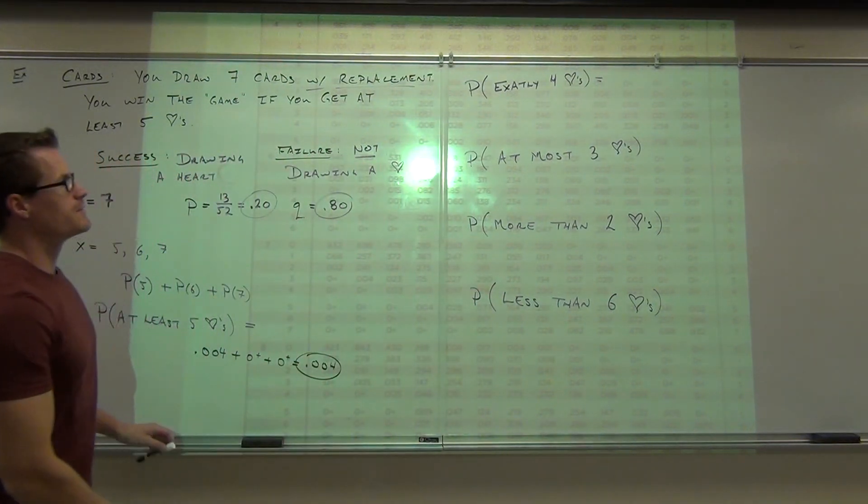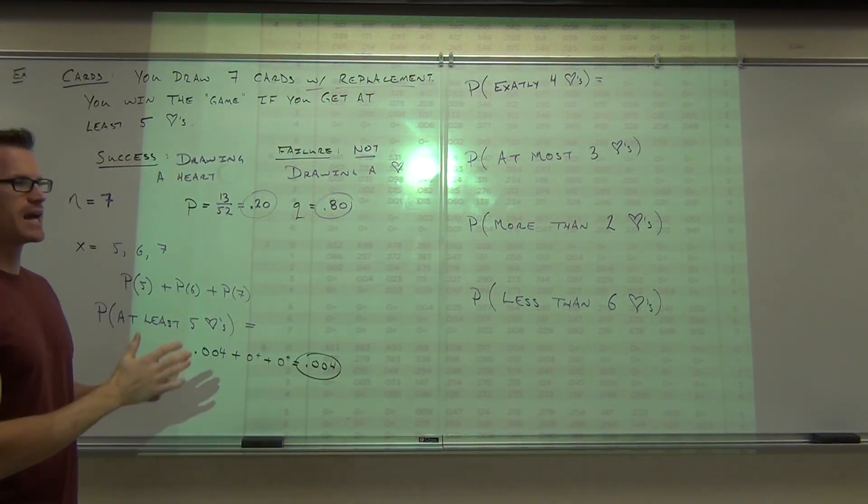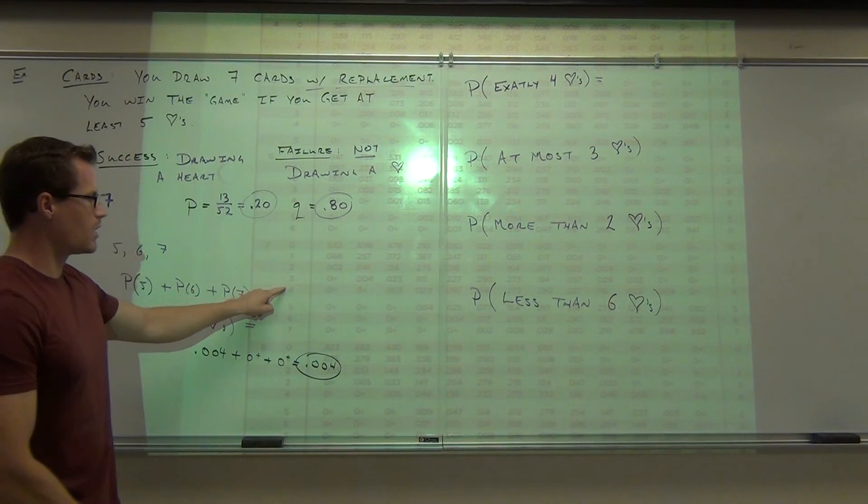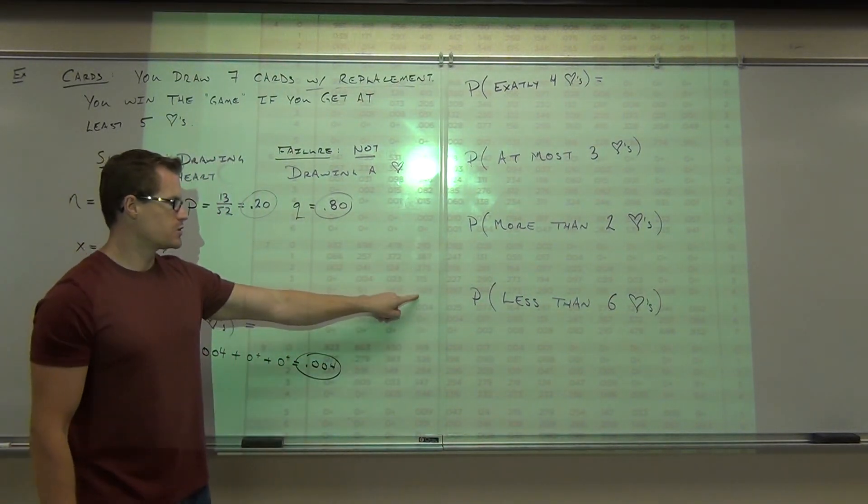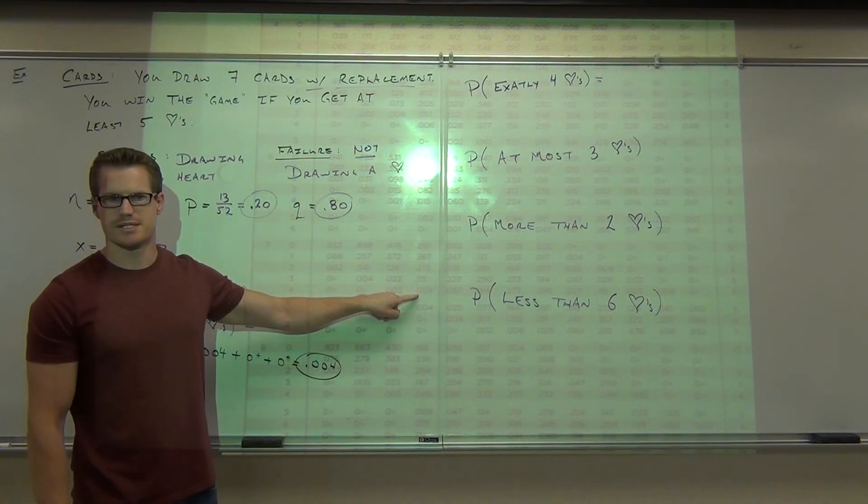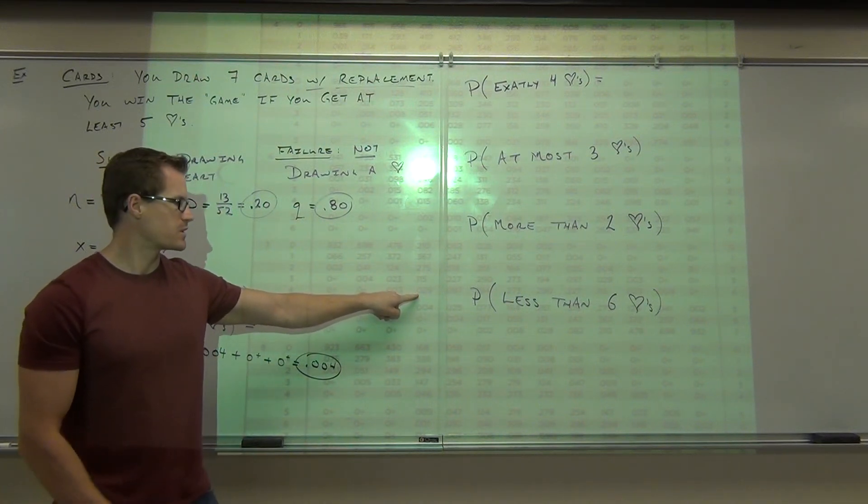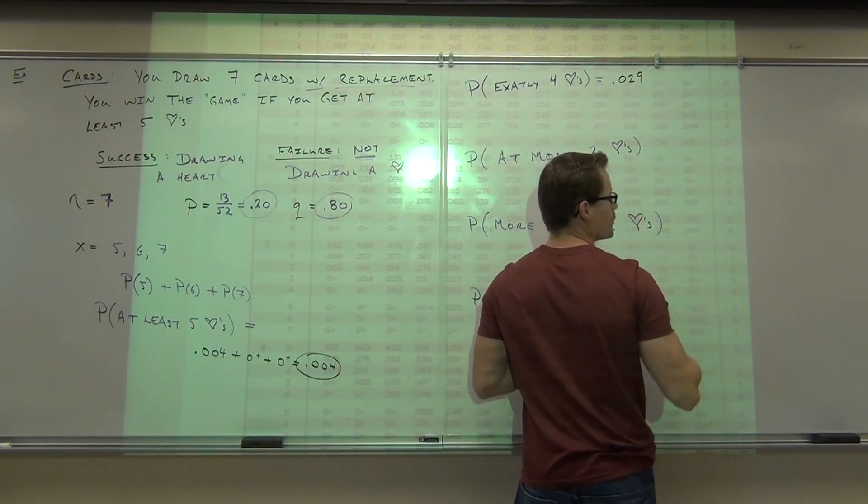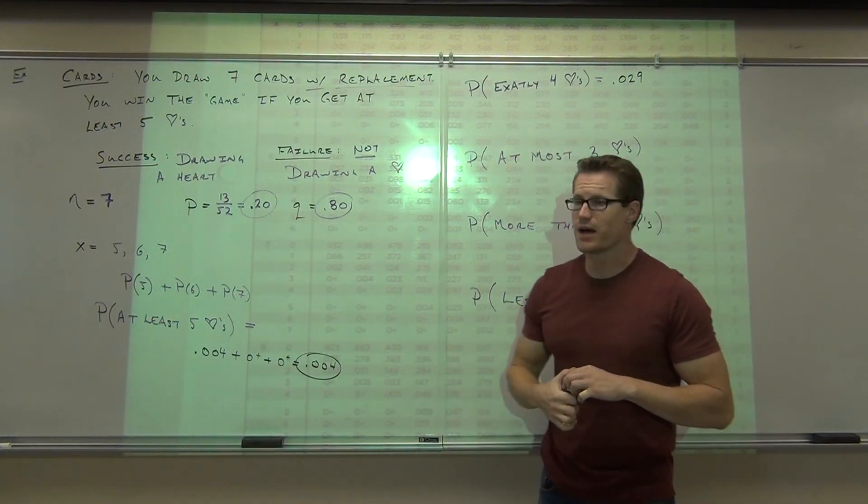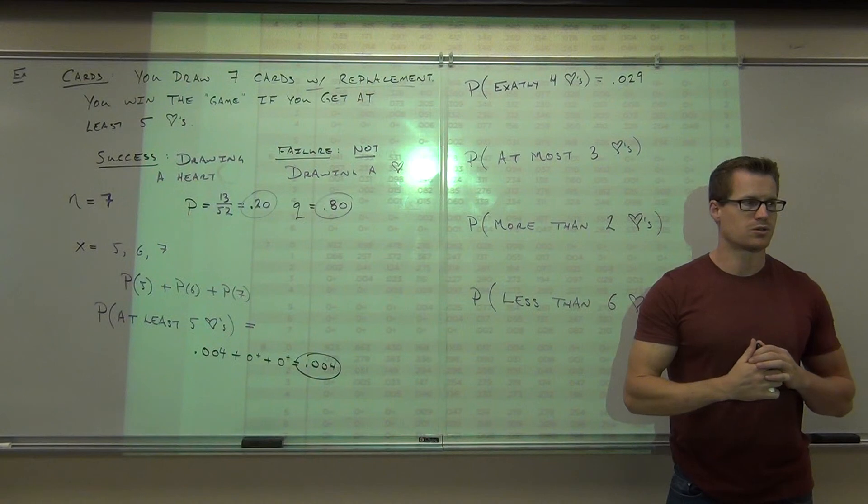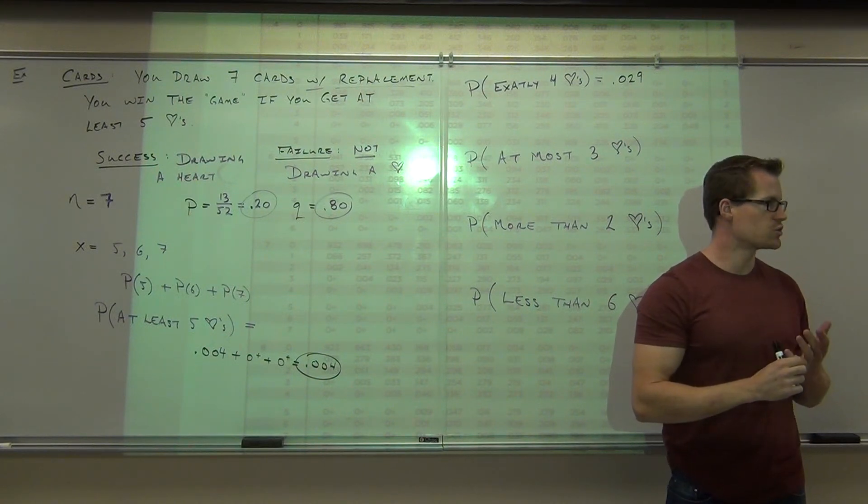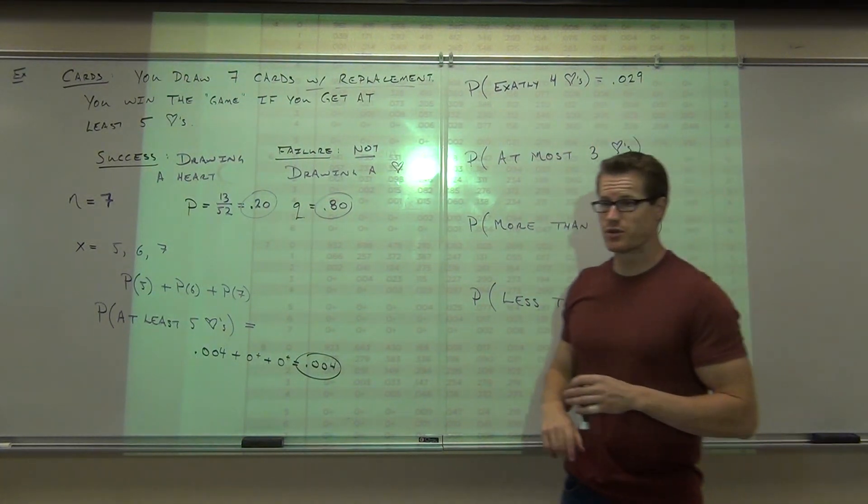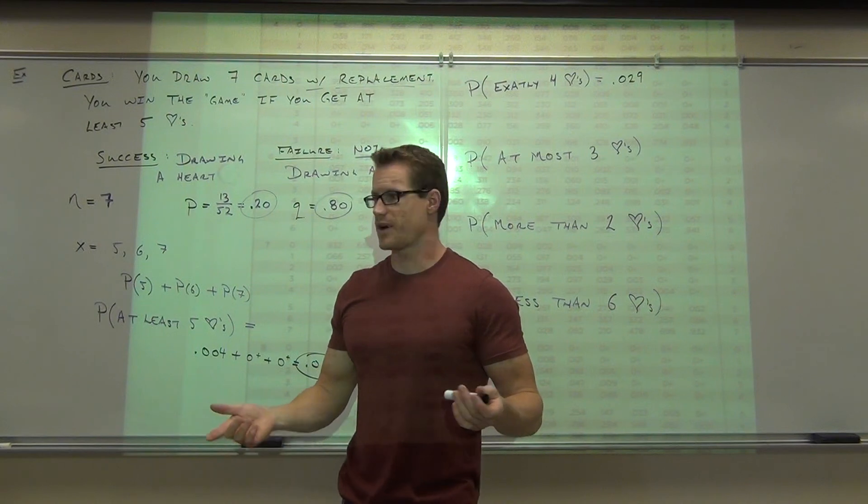Let's find the probability of getting exactly 4 hearts. Exactly 4 hearts. So let's look at that. Exactly 4. So I see 4 right here. I know I'm in this column. Do I need to add anything on to this number if I'm looking for exactly 4 hearts? So this is .029. Which game would you rather play? Getting at least 5 hearts or getting exactly 4 hearts? So if you get to choose between those games, you'd probably say, I'd rather play the getting exactly 4 hearts. Even though the probability still sucks of you winning, it's still unusual, isn't it? Less than 5%. Still unusual. It's better than this game.